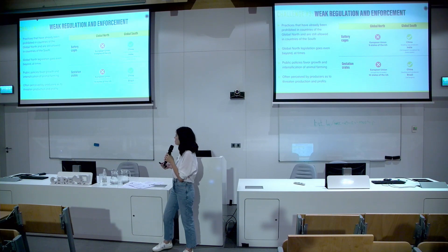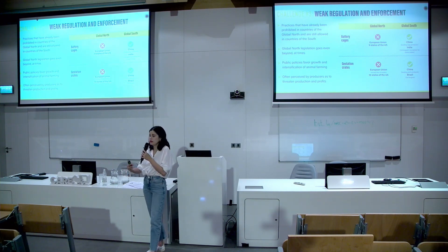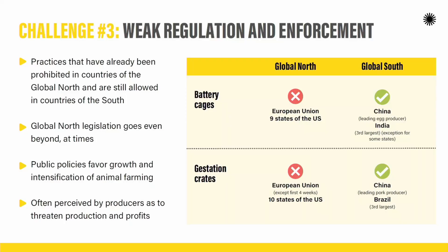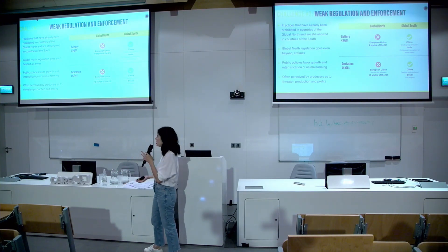Not only is there no regulation prohibiting these worst practices, but states in the Global South rely so much on commodities that governments actively encourage and incentivize production of animals, meat, eggs, and dairy. This leads to growth in animal production and intensification of farming. A study with Chinese producers found that higher animal welfare would threaten production and profits. So you have a whole context in which basically no one wants to give up their profits or their national economies for animals.